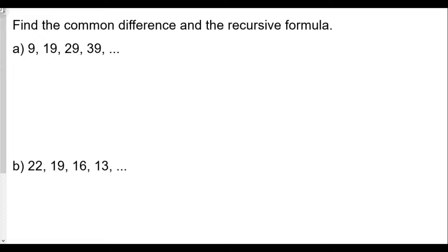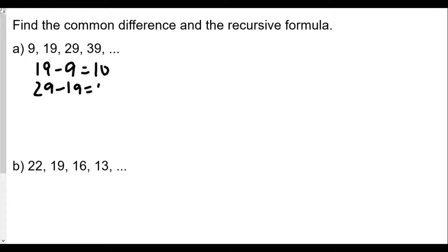The question asks us to find the common difference and the recursive formula. In the last video we talked about how to find the common difference. We take the second term minus the first term and we get 10. The third term minus the second term is also 10, and the fourth term minus the third term is 10. So our common difference D is equal to 10.